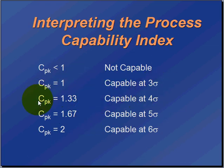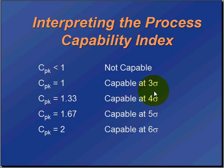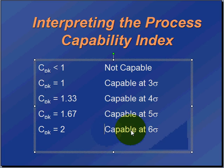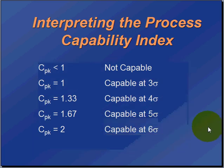And if you follow the math, it would be capable at four sigma at a CPK of 1.33, five sigma at 1.67, and if you double the three you get a CPK of 2, which means we're capable at six sigma.